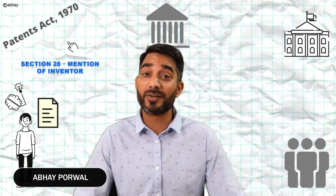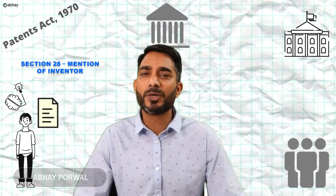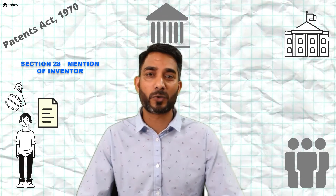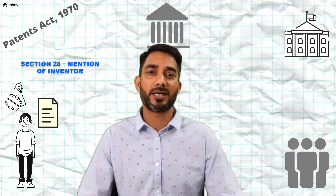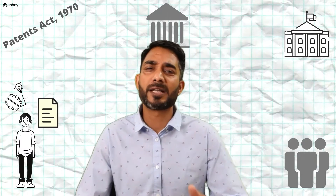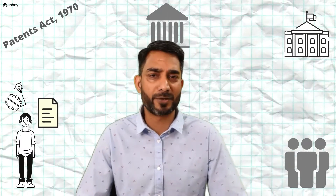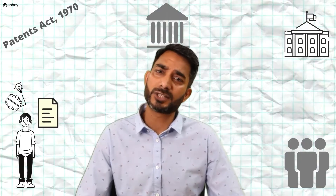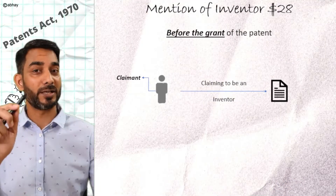Welcome back to yet another episode in this phase of our journey where we demystify the Patents Act from the perspective of others. In the last video we learned the process, procedures, and forms to be used for requesting a change in the applicant's name or substitution of applicant's name as the patent application goes through the process at the patent office. In this video we will learn about such a claim but with respect to the inventorship.